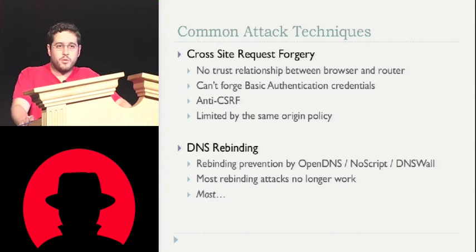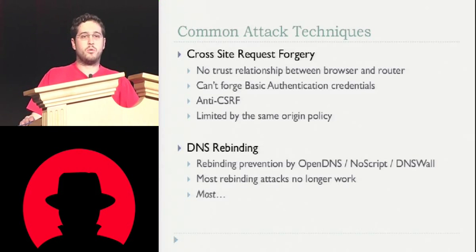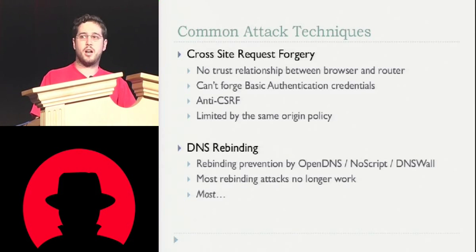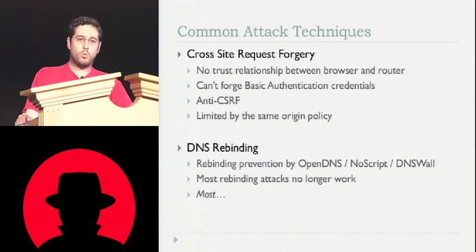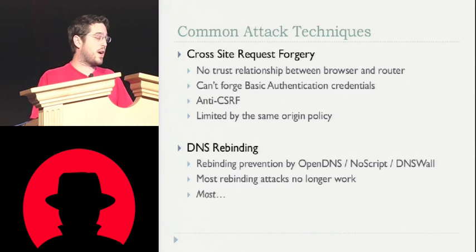If you're not familiar with the same origin policy, basically what it says is: if I browse out to attacker.com and load up some JavaScript from attacker.com, that JavaScript can interact with any page on attacker.com, but it can't interact with google.com or 192.168.1.1. And that's good because you don't want some random person's JavaScript talking to your router. So that's where DNS rebinding comes in.